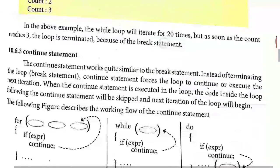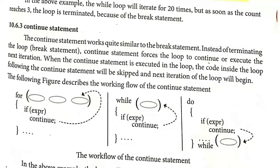Next is the continue statement, which is the exact opposite of the break statement. Whenever the continue statement is executed, the control is transferred to the beginning of the loop. It does not break the loop and come outside; it skips only the remaining part of the current iteration and starts a new iteration from the beginning of the loop.